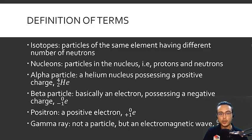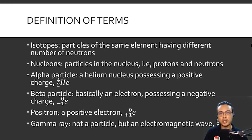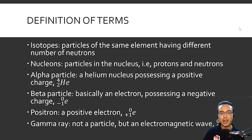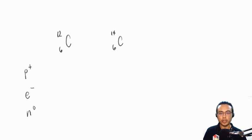For the first part of our introduction, let's define some terms related to nuclear chemistry. Isotopes are particles of the same element having a different number of neutrons. That's why the review was important — the number of neutrons is what sets isotopes apart. A classic example of isotopes are carbon-12 and carbon-14.